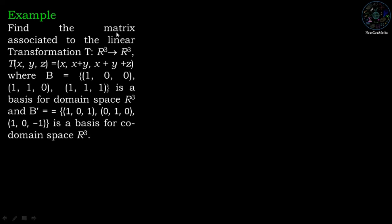Example: find the matrix associated to the linear transformation T defined from R3 to R3, where T(x, y, z) = (x, x+y, x+y+z). Here B = {(1,0,0), (1,1,0), (1,1,1)} is the basis for the domain space R3, and B' = {(1,0,1), (0,1,0), (1,0,-1)} is the basis for the co-domain space R3.